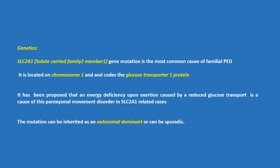Regarding genetics, the SLC2A1 or solute carrier family 2 member 1 gene mutation is the most common cause of familial PED. It is located on chromosome 1 and codes for the glucose transporter 1 protein. It has been proposed that an energy deficiency upon exertion, caused by reduced glucose transport, is the cause of this paroxysmal movement disorder in SLC2A1-related cases. The mutation can be inherited as autosomal dominant or can be sporadic.